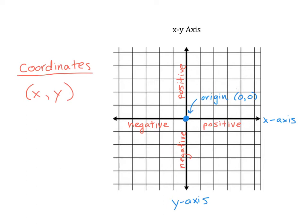The last thing I want to talk about is a more general way to name where a coordinate is falling. You might notice that there are actually four different areas created by this XY axis, and they are called quadrants. The prefix 'quad' whenever you see it means four, so that's why we call them quadrants. We always start up here because it's positive x and positive y, so we call this Quadrant I — written as a Roman numeral.